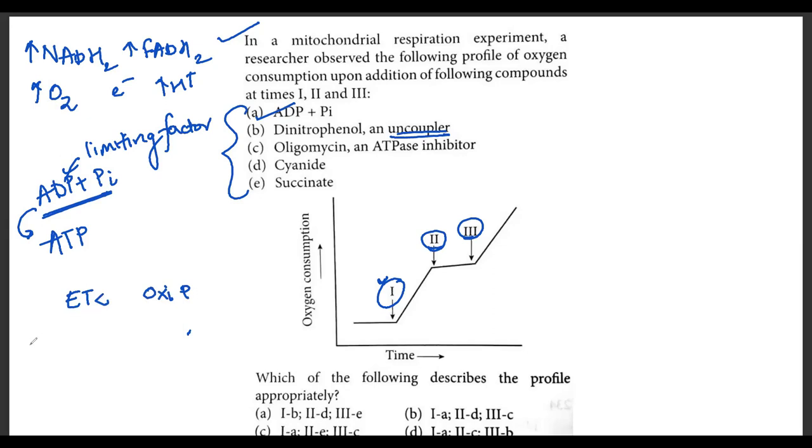In ETC, electrons pass from complex 1 to complex 2 to complex 3 to complex 4, and finally oxygen is consumed, H2O is produced, and H plus is pumped. You have the matrix and the inner membrane space where H plus is pumped up. The matrix is impermeable to H plus. They cannot directly enter into the matrix. They require an opening, and that opening is the ATP synthase.